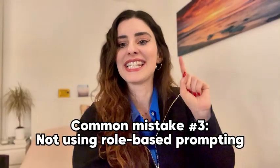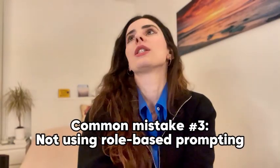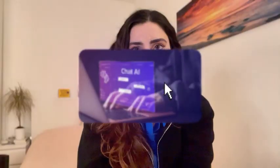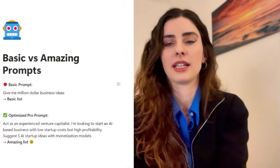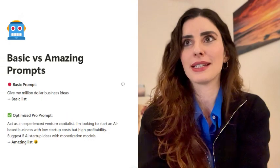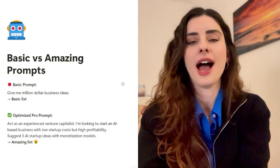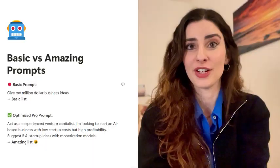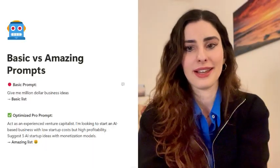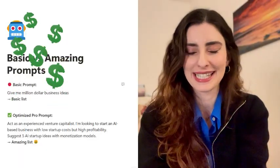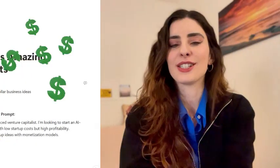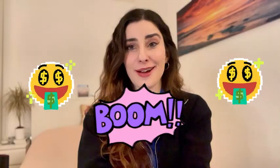Number three is not using role-based prompting. The default in ChatGPT is that it is a helpful assistant, but you can assign it a role. For example, if you say 'give me business ideas,' it gives you a random list. But if you say 'act as an experienced venture capitalist — I'm looking to start an AI-based business with low cost but high profitability, suggest five AI startup ideas with monetization models' — you're going to get amazing ideas.